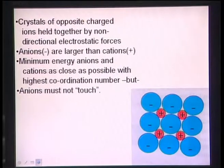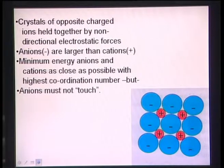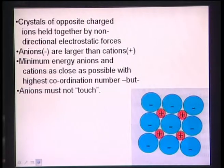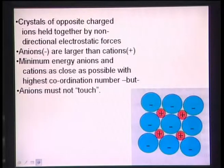Ceramics are defined as a class of inorganic solids which have covalent or ionic bonding, and which are used or processed at high temperature. In the viewgraph, a ceramic with largely ionic bonding is shown — there are positive cations and negative anions which are ionically bonded to each other.